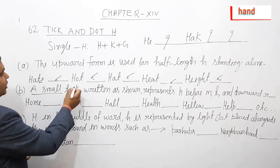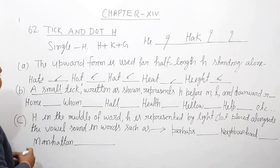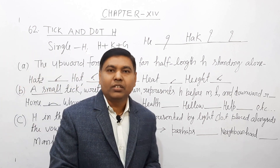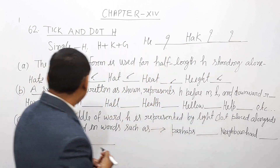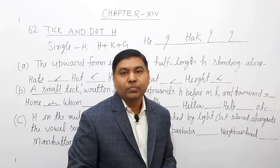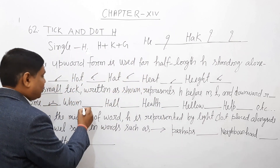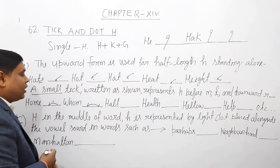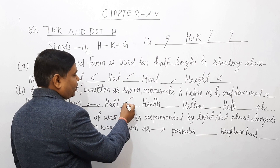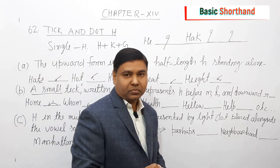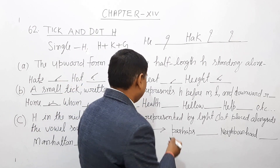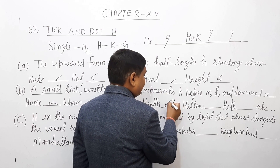यहाँ पे देख सकते हैं — छोटा सा H ऐसे बनेगा। जैसे 'Home' है, तो ऐसे आपको Home लिखना है, छोटा सा। Vowels अगर लगाना है तो H के बाद लगेगा। 'Hall' — तो यह H है, L बनाना है, Hall हो गया। 'Health' में भी देख सकते हैं कि LTH का sound है, तो H ऐसे है, L है, TH है — Health हो गया।